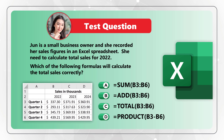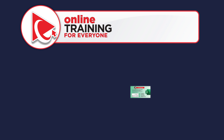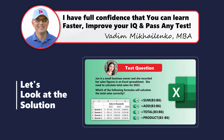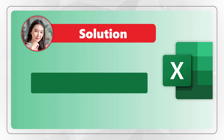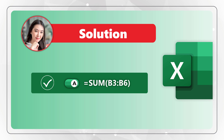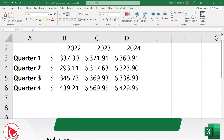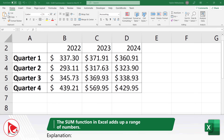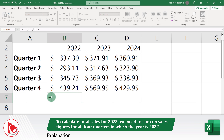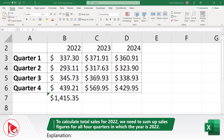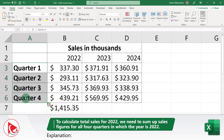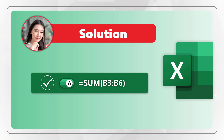The correct answer is Choice A: =SUM(B3:B6). The SUM function in Excel adds up a range of numbers. To calculate the total sales for 2022, we need to add up all the sales figures for all quarters. As you can see, column B represents the sales data for 2022, and rows 3 through 6 represent quarterly sales. So the correct formula is =SUM(B3:B6).